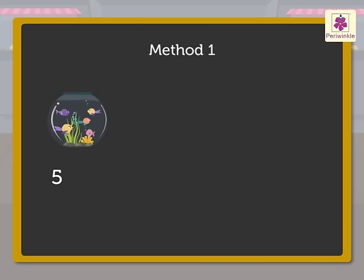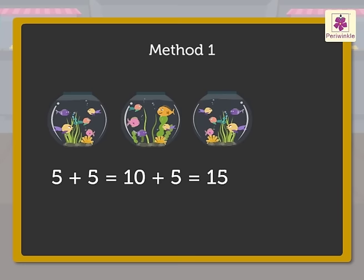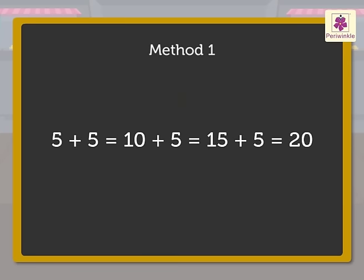5 plus 5 is equal to 10. Now, 10 plus 5 is equal to 15. And 15 plus 5 is equal to 20. So, there are 20 fish in all. Look, here we repeatedly added 5 four times to get the answer.